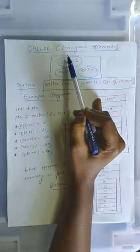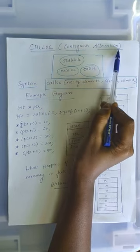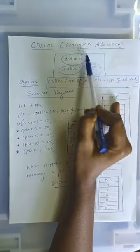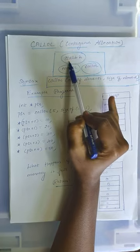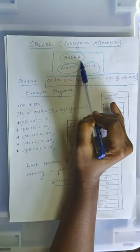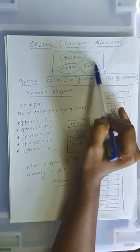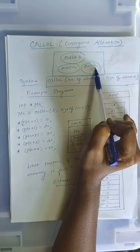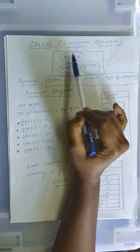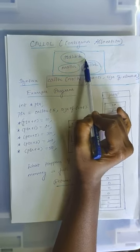CALLOC stands for contiguous allocation. CALLOC is declared in the header file stdlib.h. To use CALLOC function in our program, we have to include stdlib.h header file.